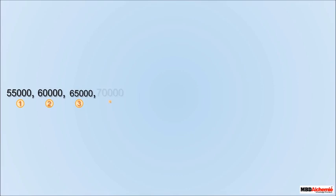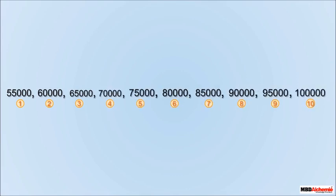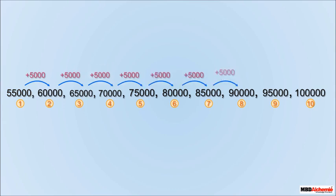We can see that in the tenth year after joining, she will get 1 lakh rupees per month. Let's focus on these numbers written over here. 55,000 is the amount she started with and every year, 5,000 is added to get the new salary. So, these are the numbers written in a pattern that follows a specific rule. These kinds of patterns are called sequences.